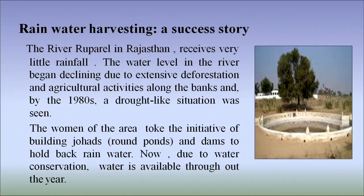There are several case studies regarding rainwater harvesting. The first is a success story — river Rupil in Rajasthan receives very little rainfall. The water level in the river began declining due to extensive deforestation and agricultural activities along the banks, and by the 1980s a drought-like situation was seen. The women of the area took the initiative of building johads, round ponds and dams to hold back rainwater. Now, due to water conservation, water is available throughout the year in this area.